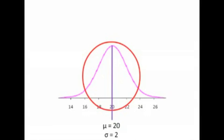Now I've placed numbers in for you. Mu is in the middle at 20, and the standard deviation is 2. One standard deviation below the mean is 20 minus 2, or 18. Two standard deviations below is 16. Three standard deviations below is 14. One standard deviation above is 22, two above is 24, and three above is 26.